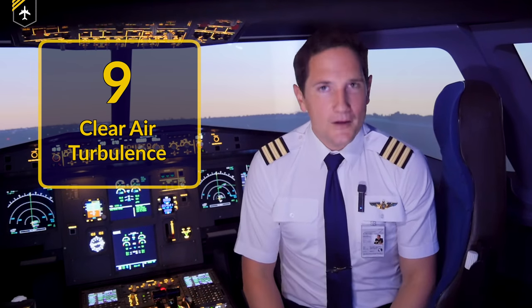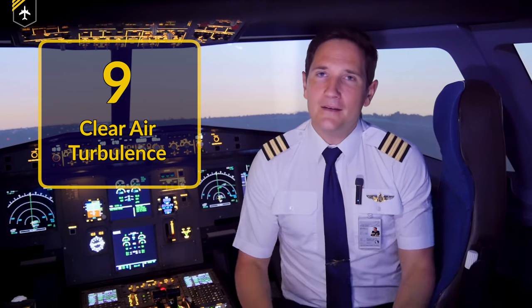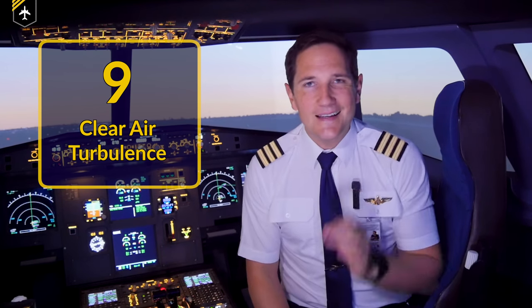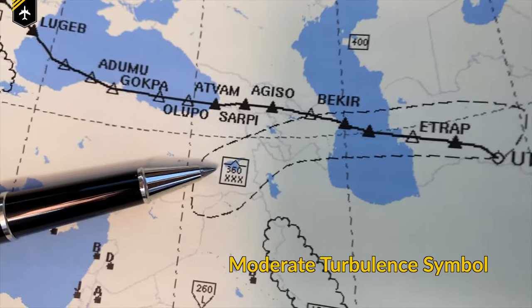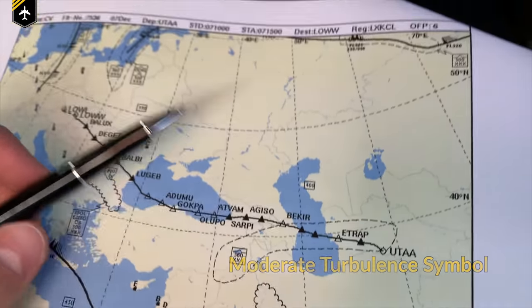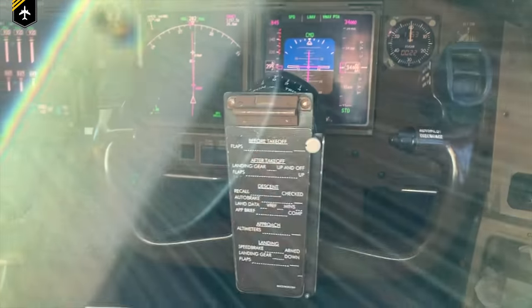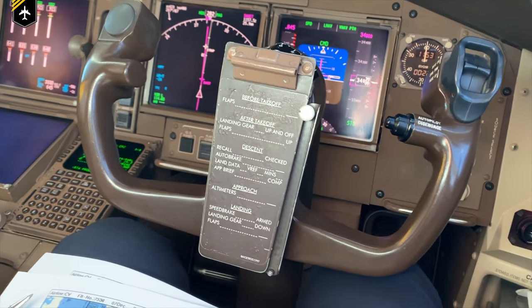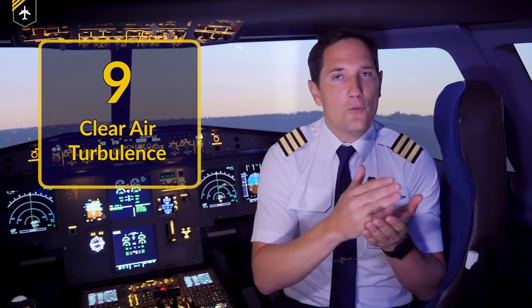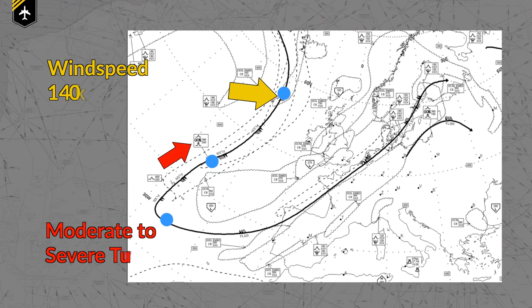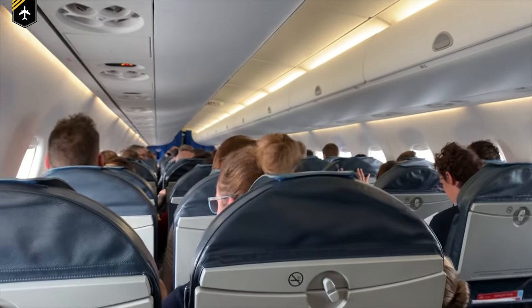Last but not least, the most unpredictable turbulence of all — number nine: clear air turbulence. Clear air turbulence happens in the absence of any visual clues, hence its name. It usually occurs when two masses of air moving at different speeds meet, better known as jet streams. Generally speaking, jet streams move from west to east at hundreds of kilometers per hour. Moving in and out of a jet stream helps reduce flight time and fuel consumption, but the negative side effect is that you can encounter some rough turbulence.